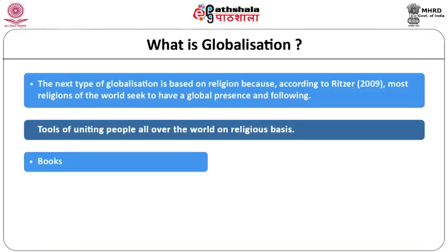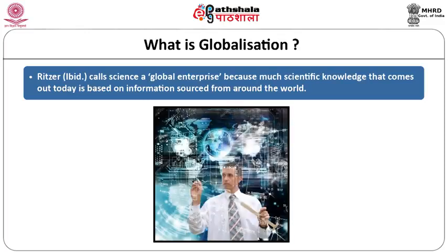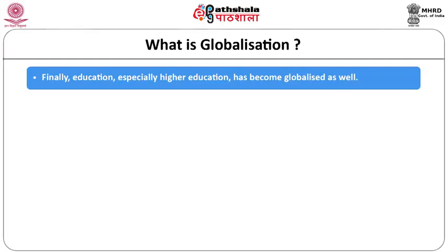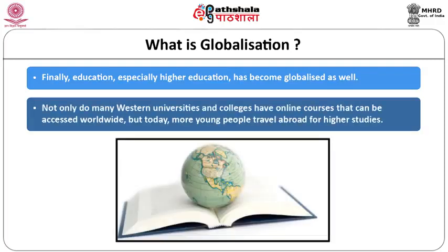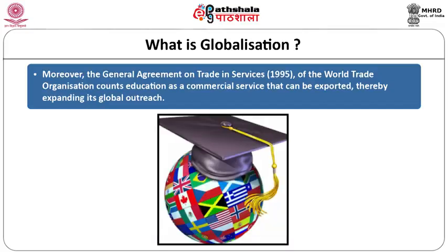The next type of globalization is based on religion, as most religions of the world seek to have a global presence and following. Ritzer also calls science a global enterprise, since much scientific knowledge is based on information sourced from around the world. Sports and education are two other areas that have been globalized — the IPL attracts players from all over the world, and satellite universities operate as franchisees of international institutions. The GATT agreement and WTO count education as a commercial service.